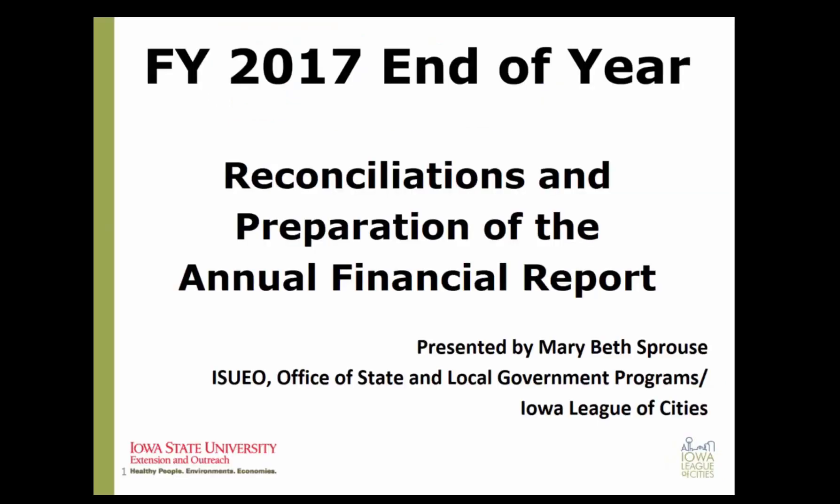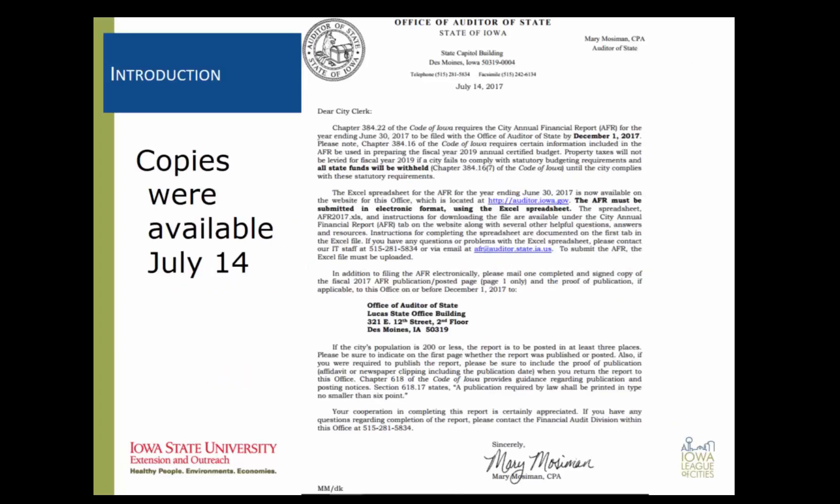Hello and welcome to the training video for preparing the Annual Financial Report for FY 2017. I'm your host, Marybeth Sprouse. In mid-July, your city should have received a letter from the Auditor of State's office. That letter indicated that the workbook for the Annual Financial Report, also known as the AFR, was ready and is posted on the Auditor of State's website for you to use.